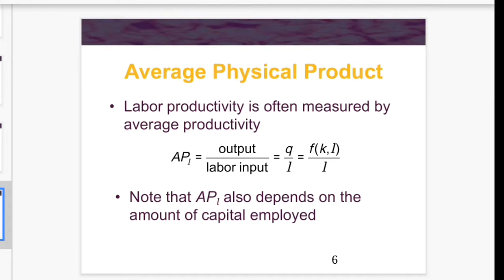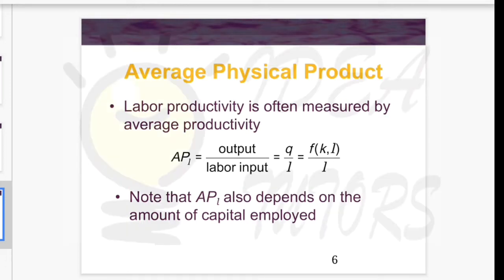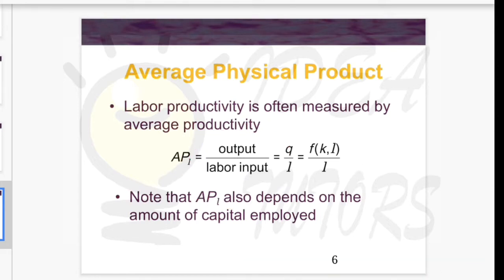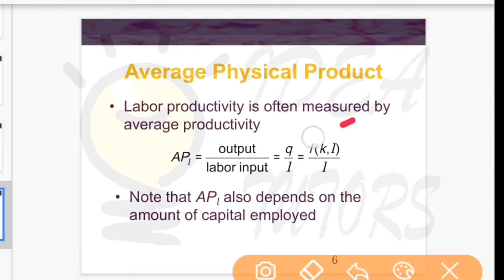Labor productivity is often measured by average productivity. As the name suggests, it is the average output from an input. APL, average productivity for labor, is defined as output per unit of labor — output divided by labor employed. APL also depends on the amount of capital employed, just as marginal productivity does, since K is always present in the production function.